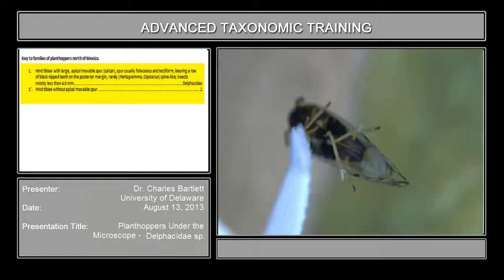And if you look at that spur fairly carefully, you'll see along this trailing margin, in here, there is a series of black-tipped teeth. The spur is flattened and bears a series of black-tipped teeth. And those are both features of the tribe Delphacene.